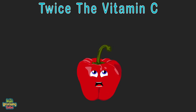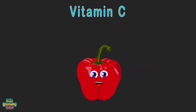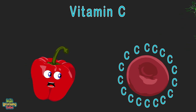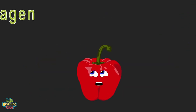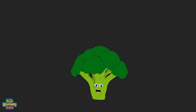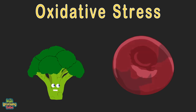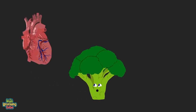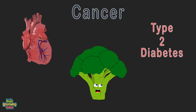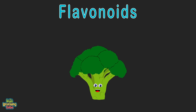I'm a sweet red pepper — I supply twice the vitamin C of any orange. Vitamin C is a nutrient that helps to protect cells and makes collagen, a protein that helps you heal. Hello, I am broccoli. I help fight oxidative stress which damages cells and leads to inflammation. I may help ward off heart disease, cancer, and type 2 diabetes. I'm rich in flavonoids, which is a class of plant pigment.